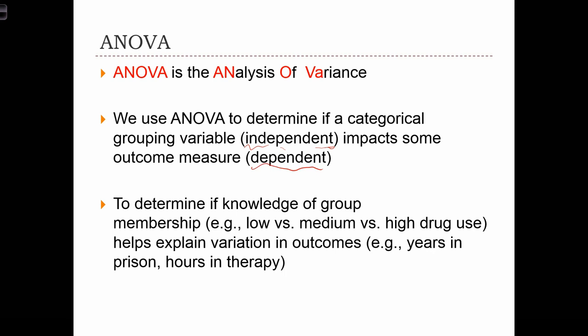So to put an example to these terms, one example of an application of ANOVA is if we were to determine if knowledge of group membership, for example, low, medium, or high drug use, so those are the groups, you can be in the low drug use group, the medium drug use group, or the high drug use group, helps explain variation in outcomes.